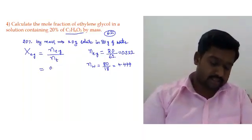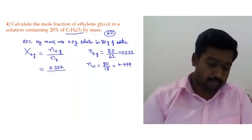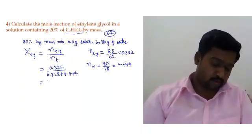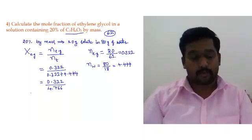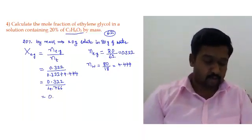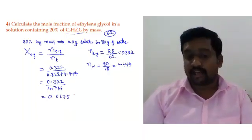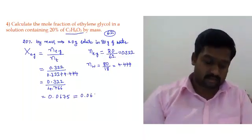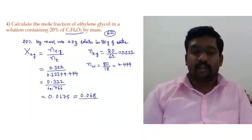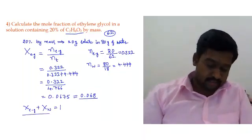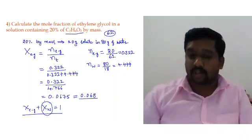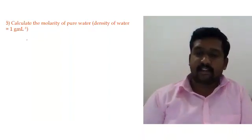Substituting into the mole fraction formula: mole fraction of ethylene glycol = 0.322 / (0.322 + 4.444) = 0.322 / 4.766 = 0.0675, which rounds to 0.068. For mole fraction of water, use: mole fraction of ethylene glycol + mole fraction of water = 1.